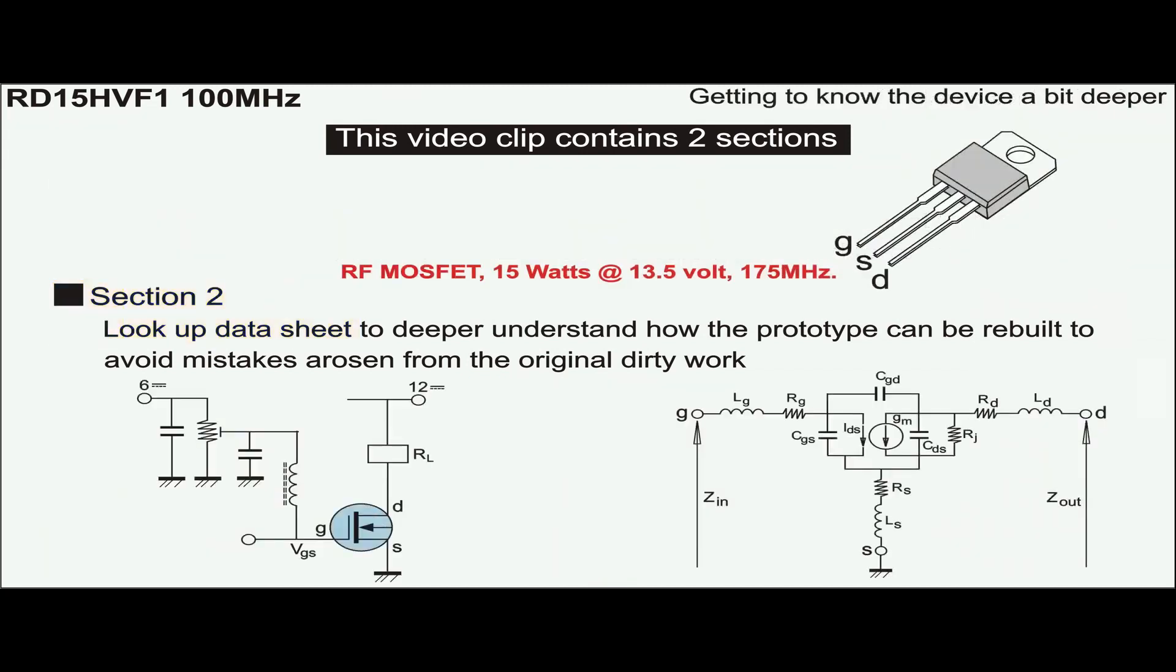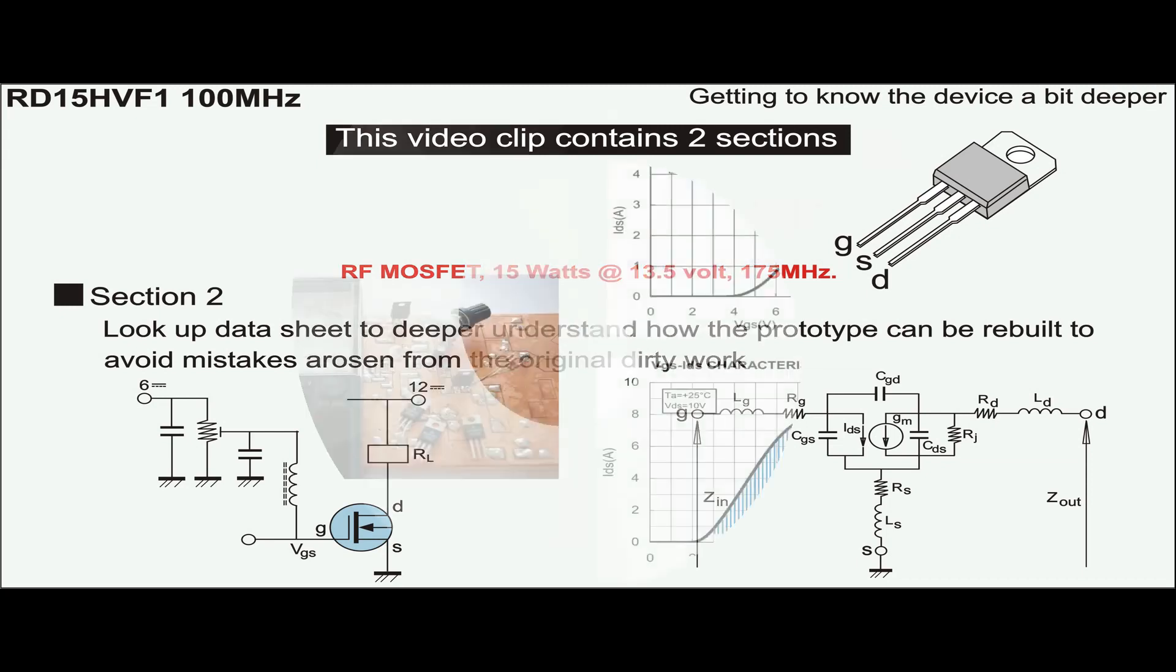First, it is an RF MOSFET outputting 15 watts at 175 MHz. Second, it has an equivalent circuit. Third, the gate threshold starts around 2.5 V compared to 4 V as in its younger brother, the RD-06.